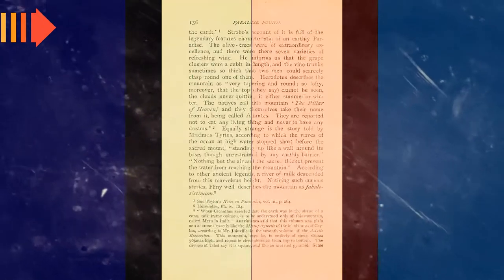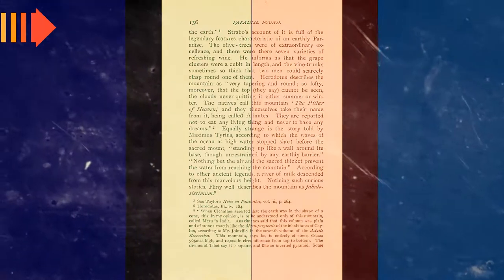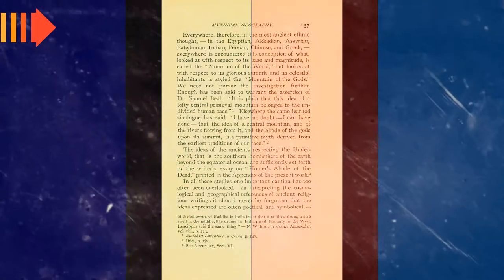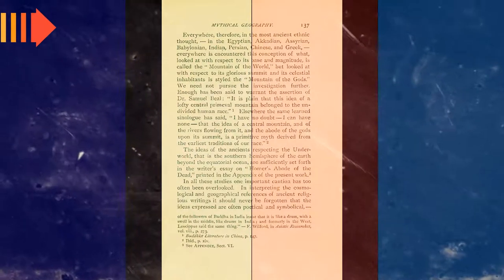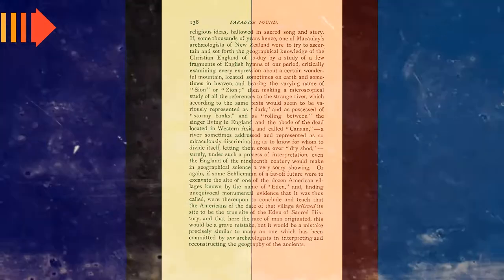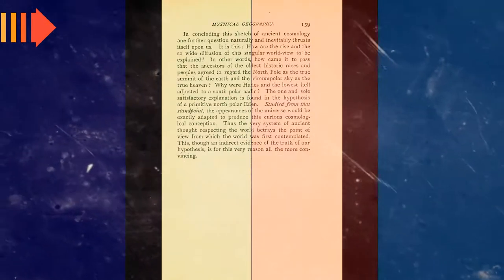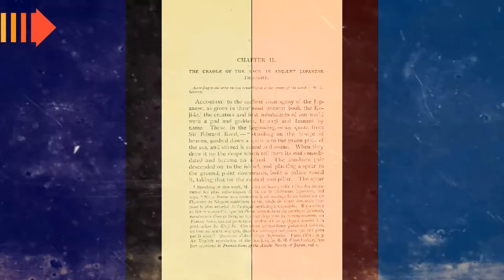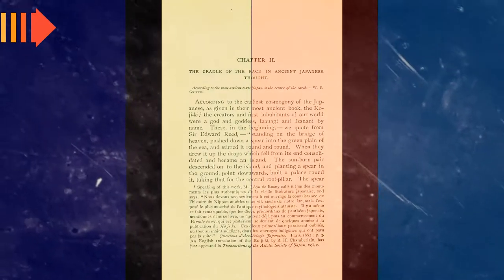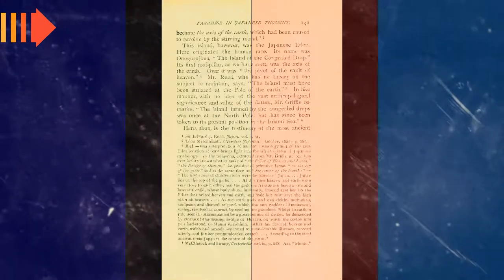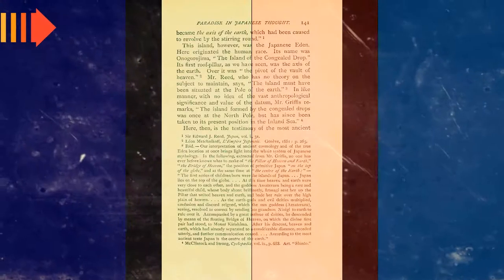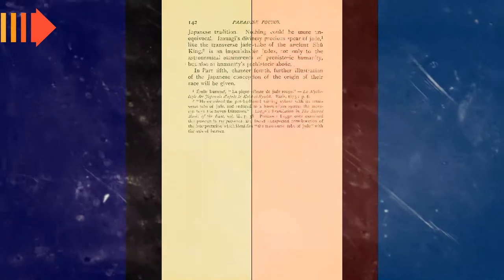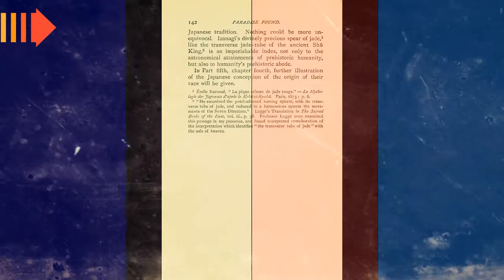According to Critias, 9,000 years before his lifetime a war took place between those outside the Pillars of Hercules at the Strait of Gibraltar and those who dwelt within them. The Atlanteans had conquered the parts of Libya within the Pillars of Hercules, as far as Egypt, and the European continent as far as Tyrrhenia, and had subjected its people to slavery. The Athenians led an alliance of resistors against the Atlantean Empire, and as the alliance disintegrated, prevailed alone against the empire, liberating the occupied lands.